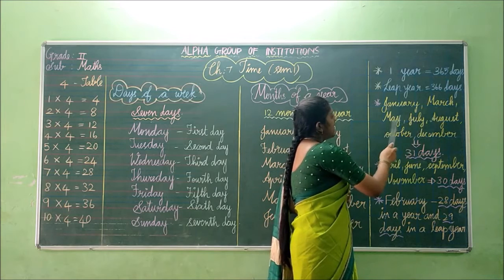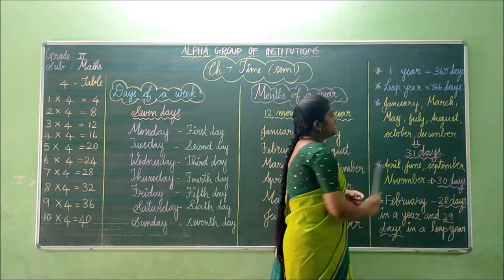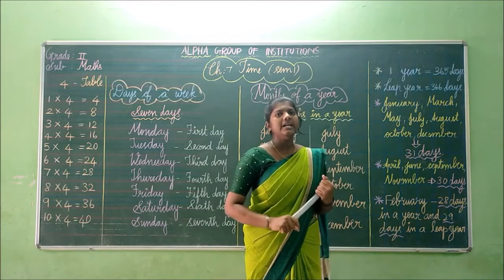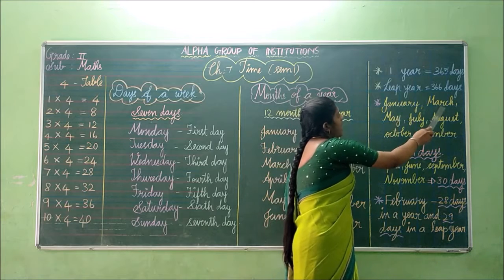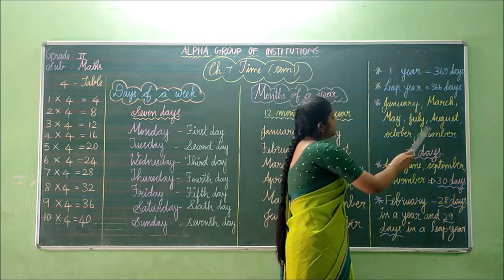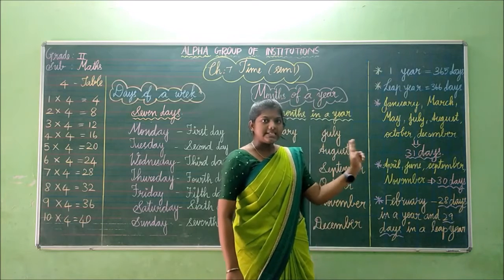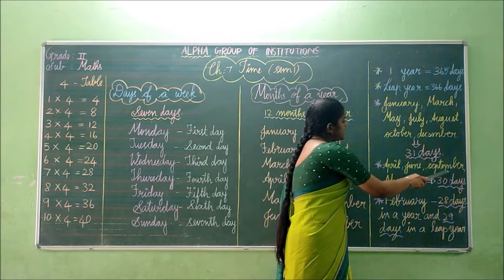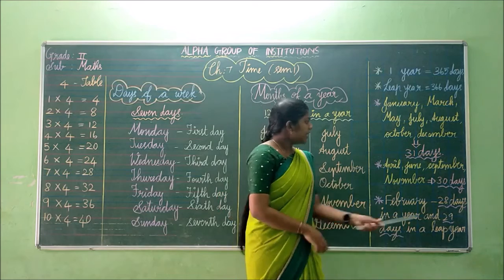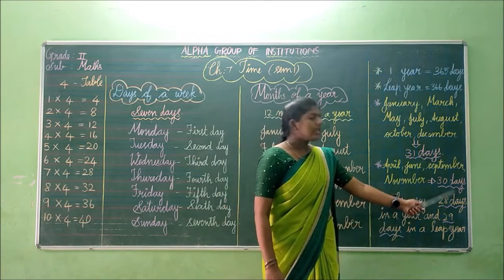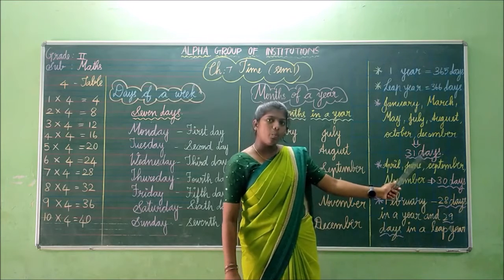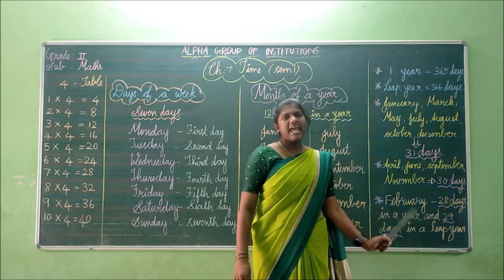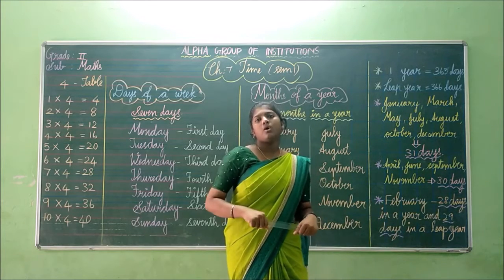January, March, May, July, August, October and December — these 6 months will have 31 days. And April, June, September, November — these 4 months will have 30 days. And for February, you will have 28 days. So February is the shortest month of the year, because we have only 28 days in a normal year.